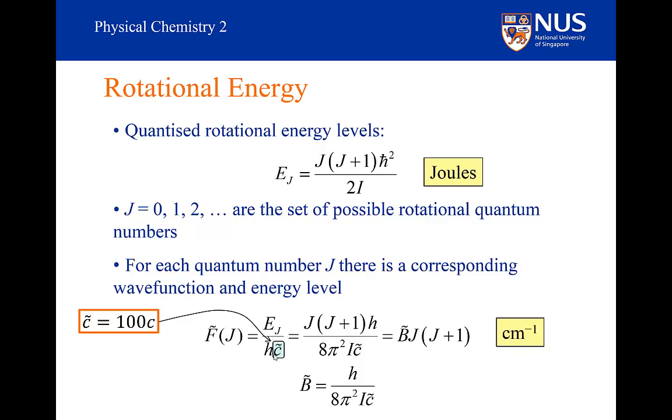This is just a convenient abbreviation and I will be using this abbreviation and this particular notation throughout the rest of this lecture series. I will use the tilde over the c as a shorthand for writing 100 times c. Any time I put a tilde above a parameter it means that I am using centimeters and not meters. So if I divide through by hc tilde and I express my h bar as h over 2π, this gives this expression here. The energy divided by hc tilde is given the symbol f tilde and is known as the rotational term.